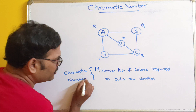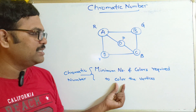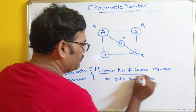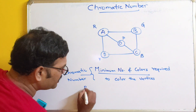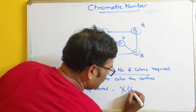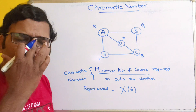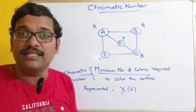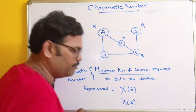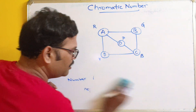The chromatic number is the minimum number of colors required to color the vertices such that no two adjacent vertices share the same color. It is usually represented as χ(G), where G is the graph. For example, if χ(G) = 2, it means two colors are required to color the graph.